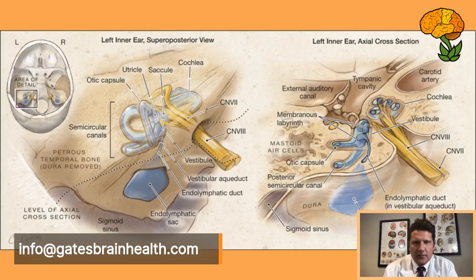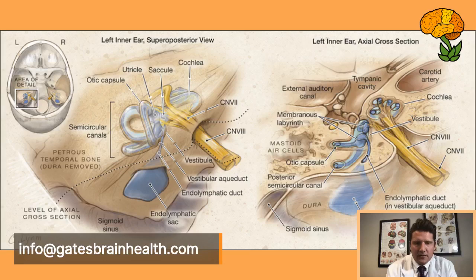You can look at the anatomy and see the angles of the different semicircular canals. The posterior semicircular canal — specifically the vertical portion of that distance versus the posterior fossa distance, the distance between those two structures — was decreased in Meniere's disease.